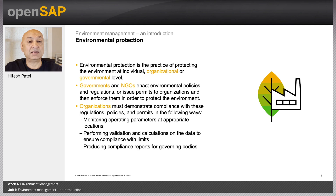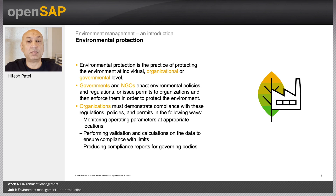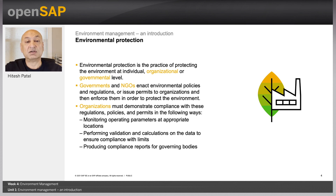Organizations comply by following the requirements stated in the regulations and policies. For example, they may be asked to monitor the operating parameters of their business — such as the amount of water being used, the amount of air pollution being put out, or the amount of chemicals being used. They may have to perform validations and calculations of their environmental outputs, such as the amount of air emissions they put out. And they have to produce compliance reports in a timely manner and report them back to government agencies.